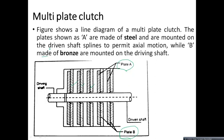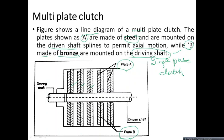Let us go for another type of clutch — the multi-plate clutch. In a multi-plate clutch line diagram, plate A is connected to the driven shaft and is made of steel, while plate B is made of brass and is mounted on the driving shaft.